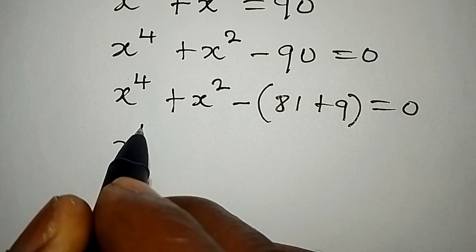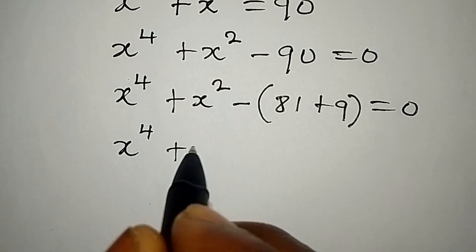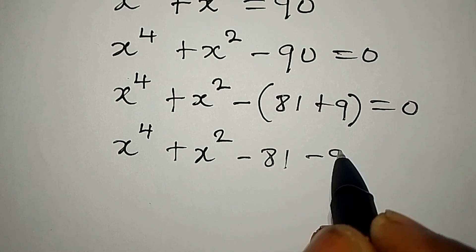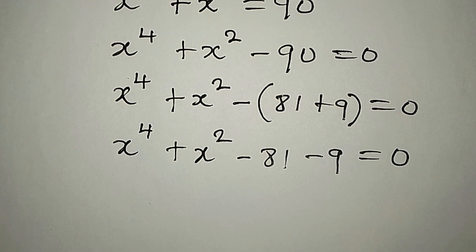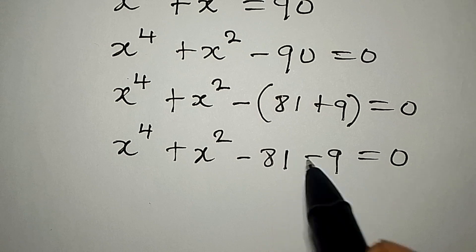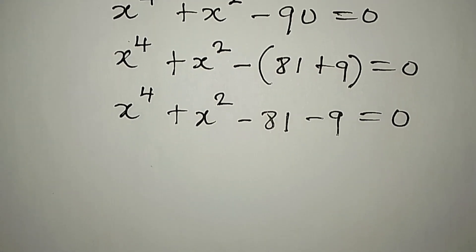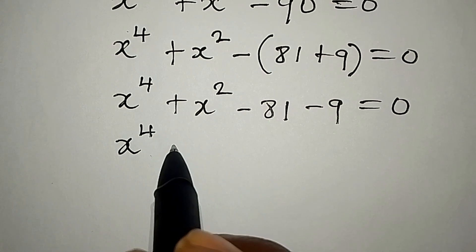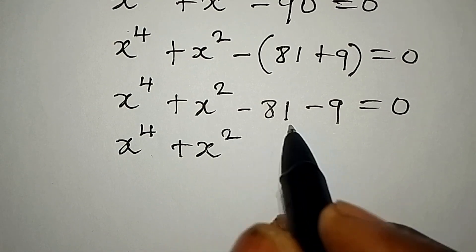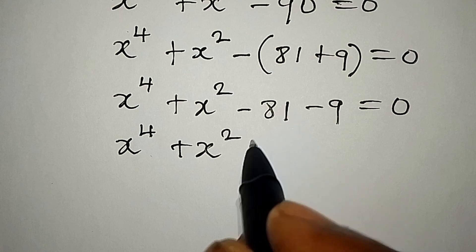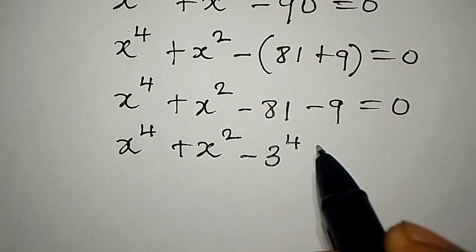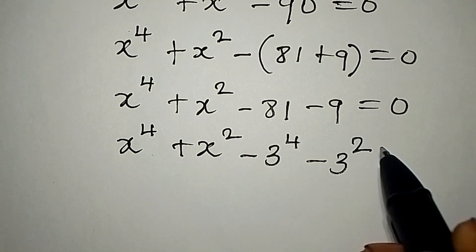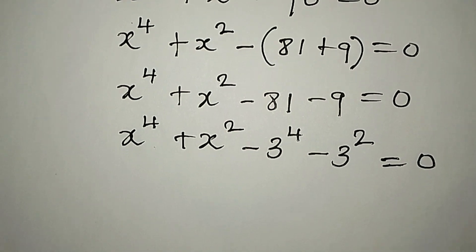Opening the bracket we have x to the power of 4 plus x to the power of 2 minus 81 minus 9, and this is equal to 0. Remember, 81 minus 9 will still give us minus 90. Now, 81 is the same thing as 3 to the power of 4, while 9 is the same as 3 to the power of 2, and this is equal to zero.